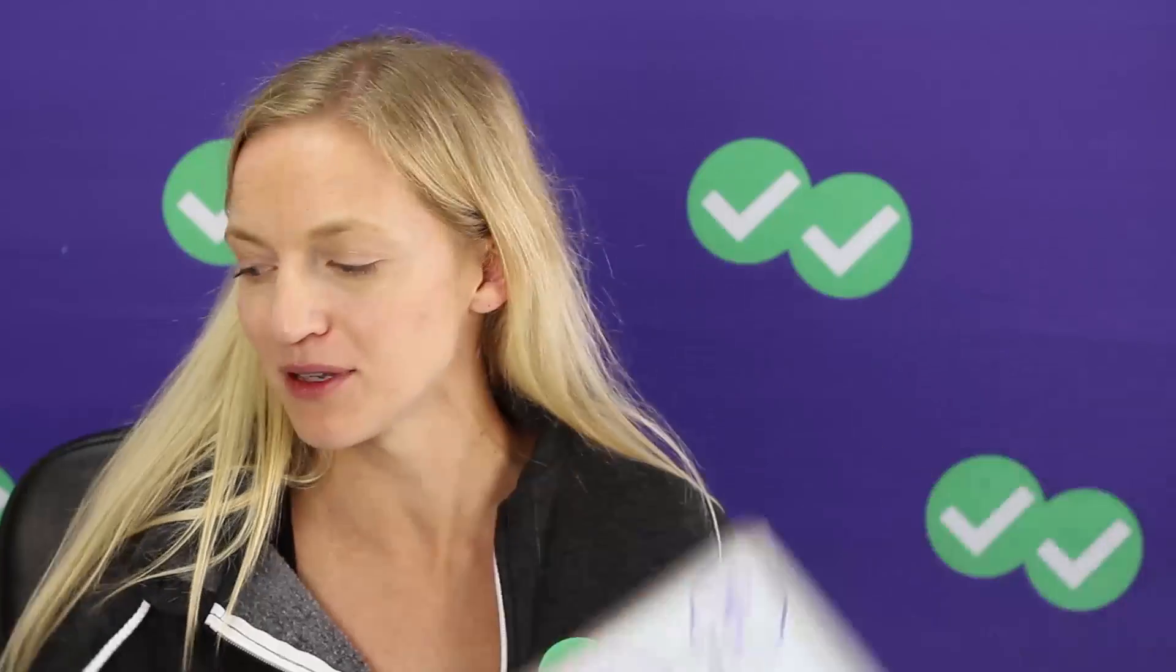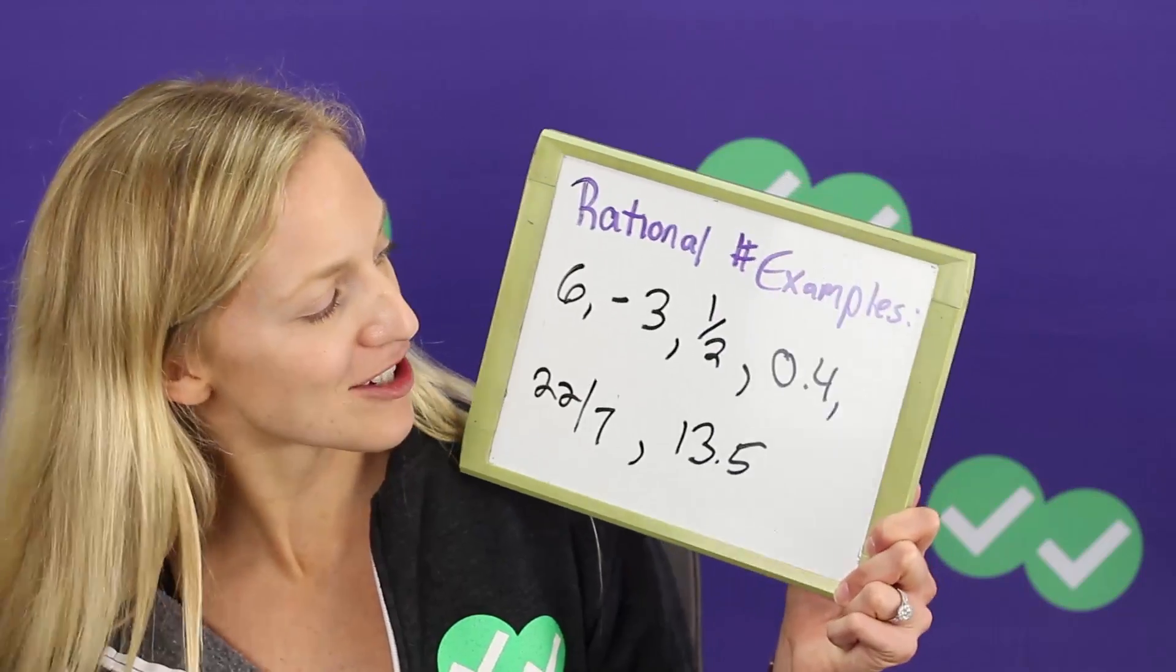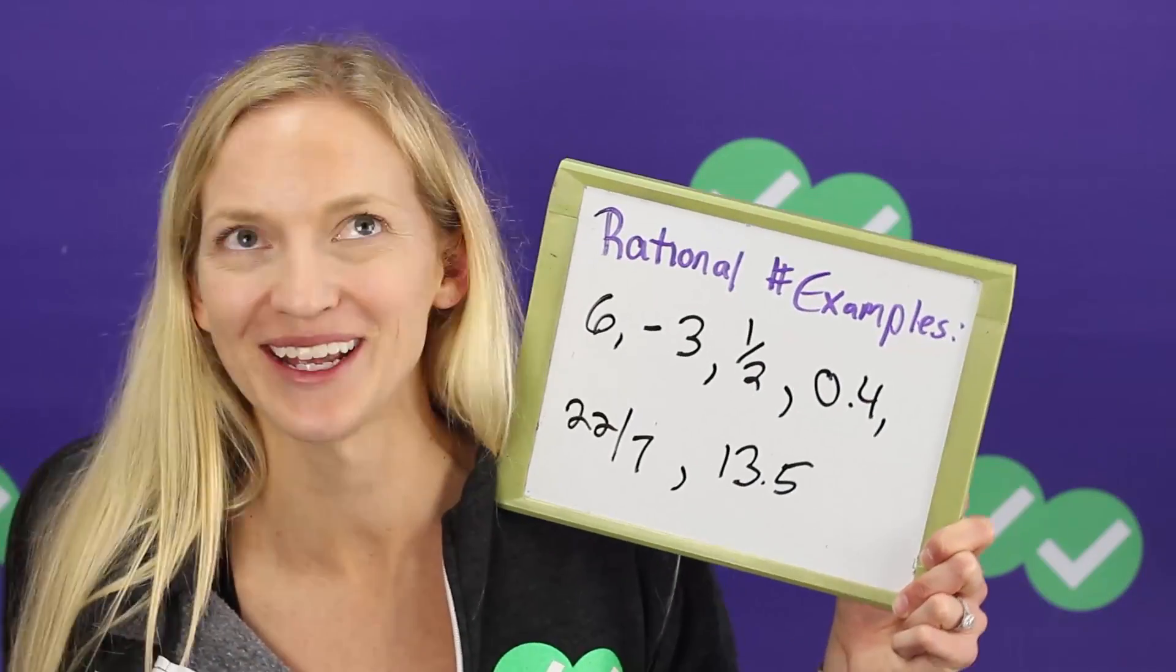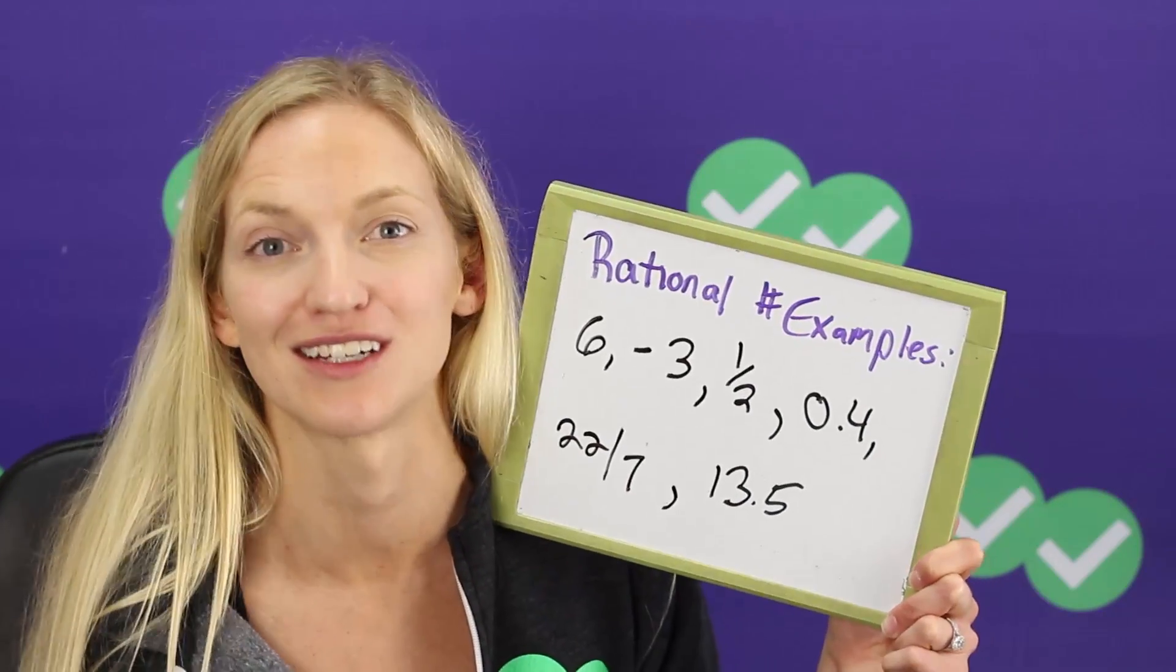So let's go ahead and take a look at some examples and then decide whether a few things are rational or irrational to make sure you got it. All right here are some rational numbers. Six, so any whole number can be expressed as a fraction itself over one. So six is six over one.